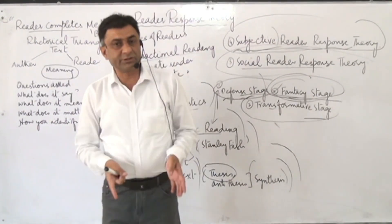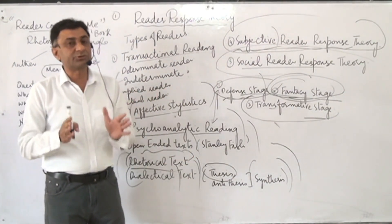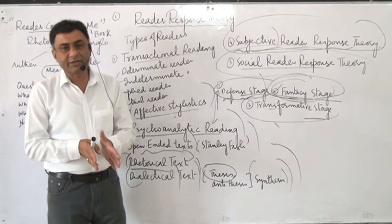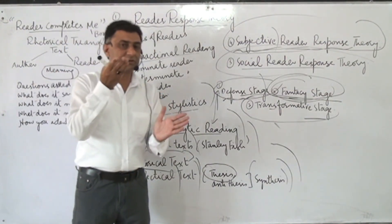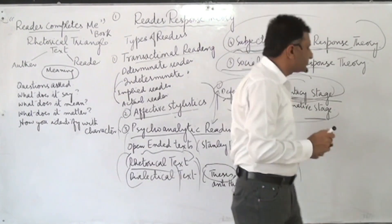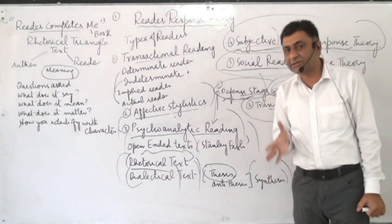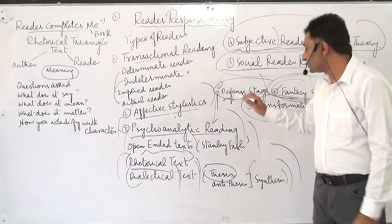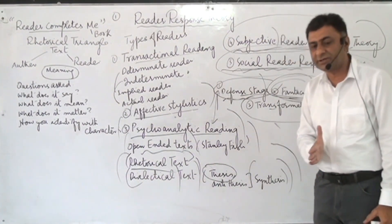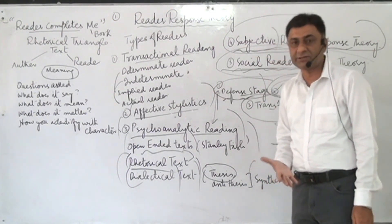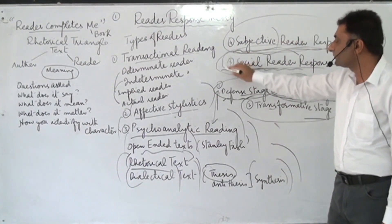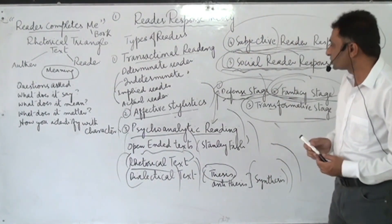Social reader response theory means there is a society, a social system, a culture, and a process that molds the personality of the writer, and then that writer molds the text. That text can be interpreted by keeping in mind the social context. Everything in the text is taken from society. The question is: what is the social response of the reader, and what does society demand from that reader? All of this is kept in mind in social reader response theory.